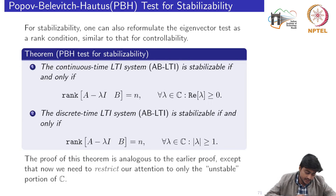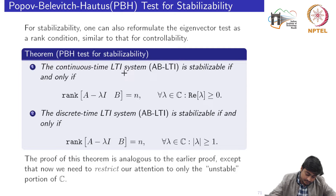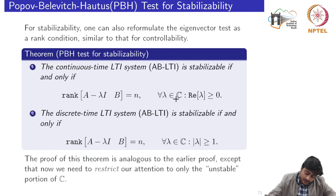The next test is the PBH test — the Popov, Belpich, and Hottest test for stabilizability. For stabilizability, one can reformulate; this is what we have defined as the PBH test — an elegant restatement of the eigenvector test. The continuous-time system is stabilizable if and only if this rank condition is satisfied for all lambdas belonging to the set of complex numbers such that the real part of lambda is greater than or equal to zero.